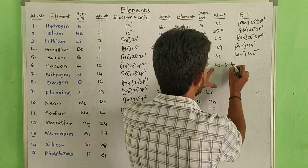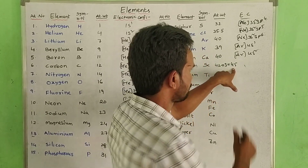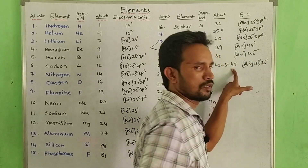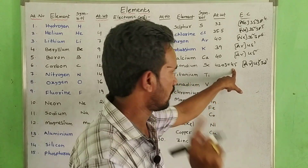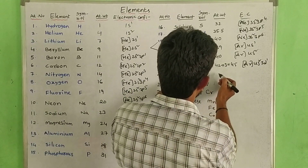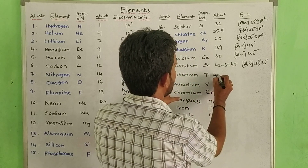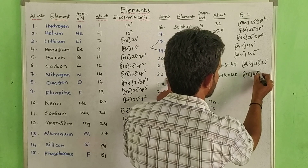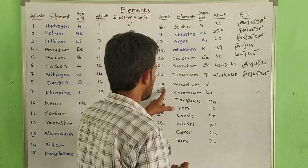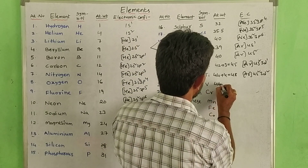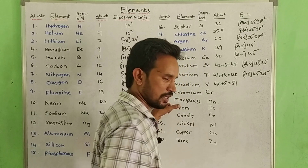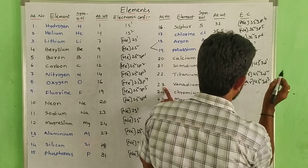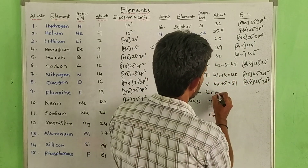We have to change to [Ar] 4s2 with 3d filling. The first electron enters the d-orbital. Element 21 is scandium. Element 22 is titanium, atomic weight 44 — electronic configuration [Ar] 4s2 3d2. Element 23 is vanadium, atomic weight 51 — electronic configuration [Ar] 4s2 3d3.